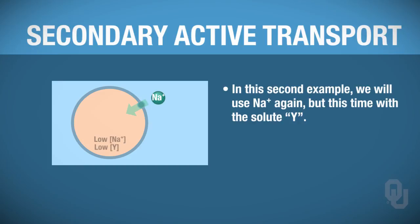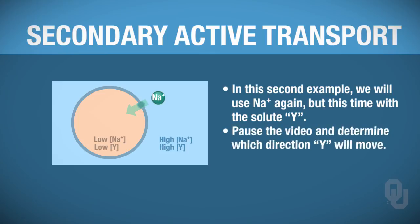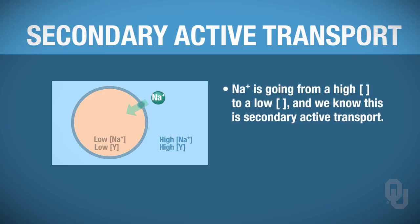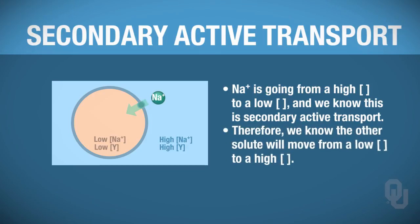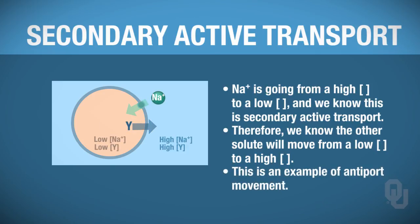Here's the next example, again with sodium but now with a new solute Y. Y has a low concentration inside the cell and high on the outside. If you'd like to pause and figure out which direction Y will move, please do so. Since sodium is going from high to low, we know we're dealing with secondary active transport, and therefore the other solute—Y—must be moving from low to high.